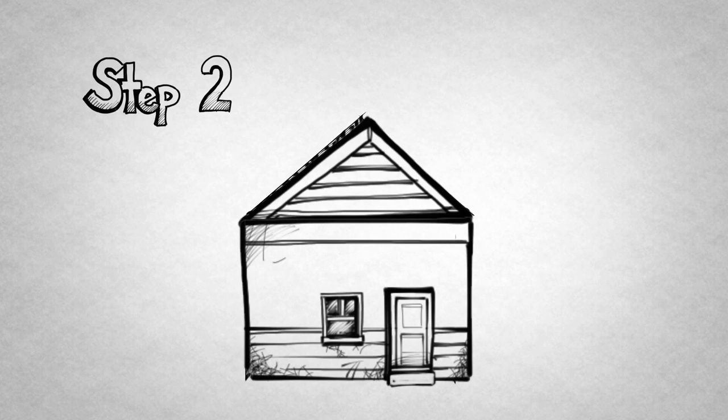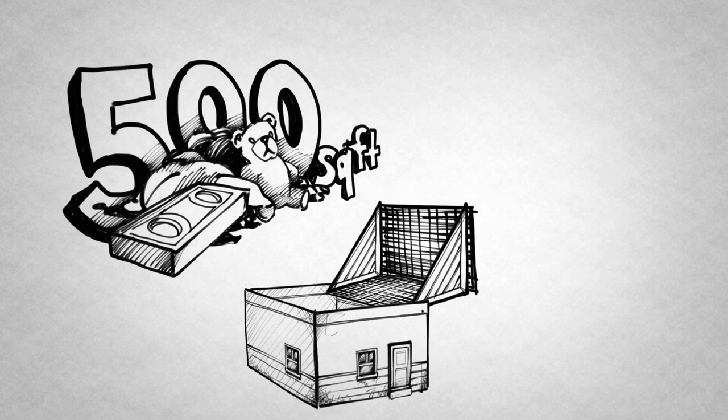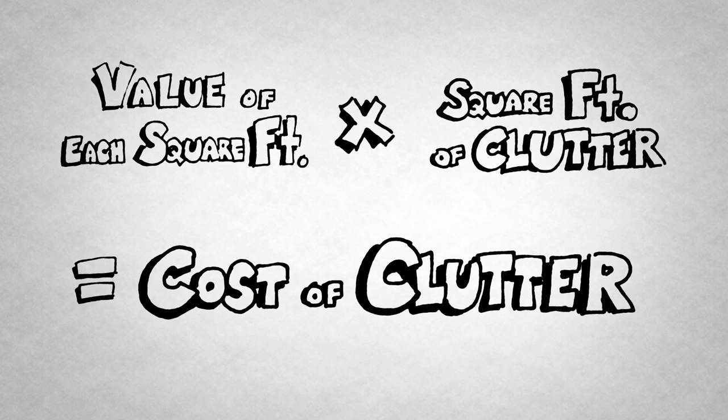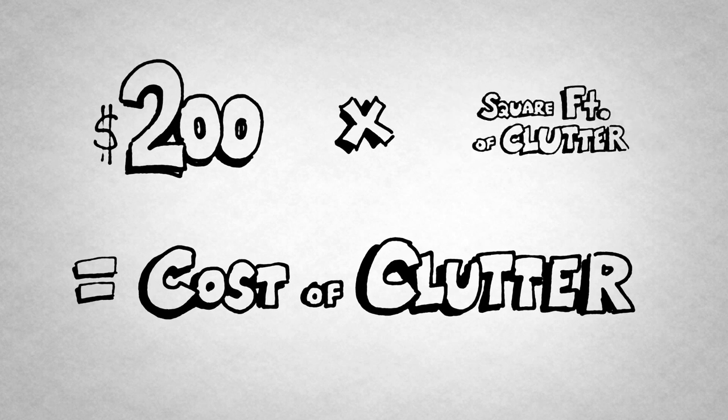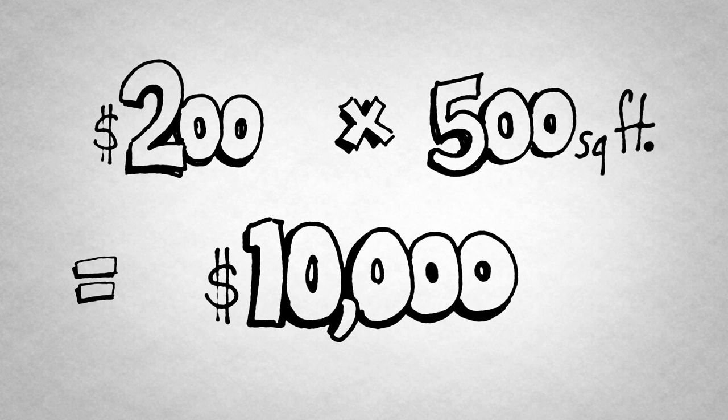Time for step two. Go through your home and figure out how much clutter you have. Let's say a third of your house is filled with old VHS tapes, sweaters, and stuffed animals. That's 500 square feet. Let's continue with our clutter cost equation. Multiply the value of each square foot by the total square feet taken up by your stuff. This number will show you how much money you're wasting on clutter. For example, if each square foot of your home is worth $200 and you have 500 square feet of clutter, that's $10,000 being wasted.